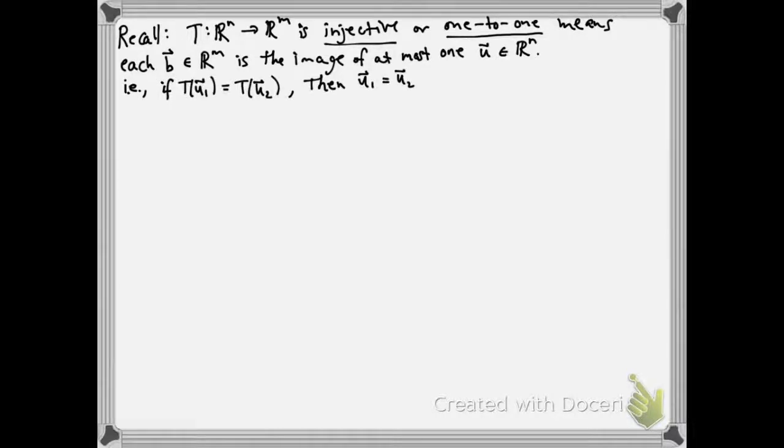In other words, if T of U1 equals T of U2, then we must have U1 equals U2.